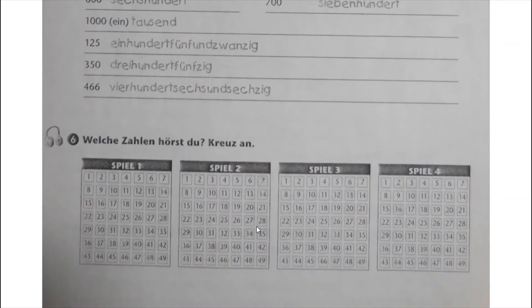Number six: 'Welche Zahlen hörst du? Kreuze an.' - You have to listen and then cross the number you heard. This is a listening exercise, so we will do it later.